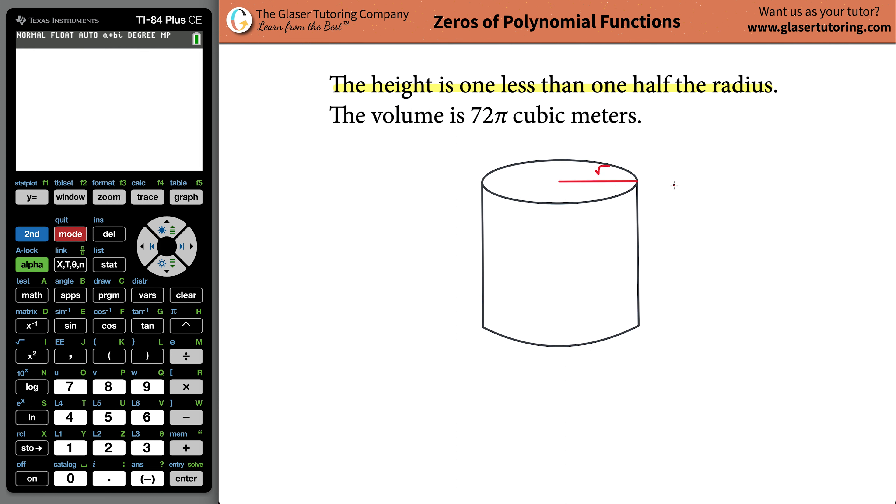So first thing is just reread that maybe one or two more times. This is the radius and this will represent the height. So let's think about what's going on. First of all, they're talking about something about half the radius, right? They're talking about half the radius. So if the radius you call R, then half of the radius has to be R over two. This would be half of the radius.